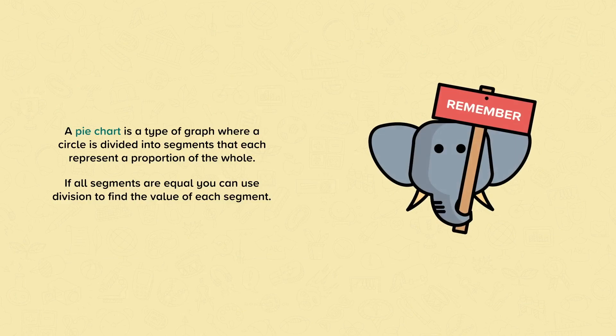Remember, a pie chart is a type of graph where a circle is divided into segments that each represent a proportion of the whole. If all segments are equal, you can use division to find the value of each segment.